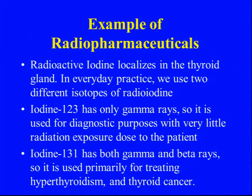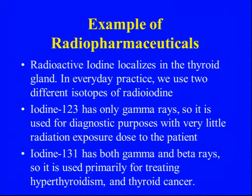We also have iodine-131. Why? Because we treat thyroid disease — we treat hyperthyroidism and thyroid cancer. When we treat hyperthyroidism or thyroid cancer, we use iodine-131 rather than iodine-123. But if we're doing a diagnostic study, we don't want that beta radiation — we just want the gamma radiation to get our pictures, because the patient would get a bigger radiation dose otherwise.